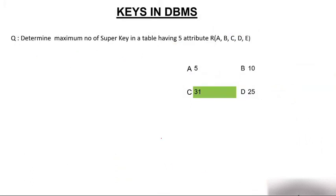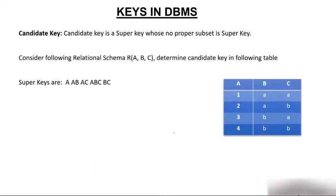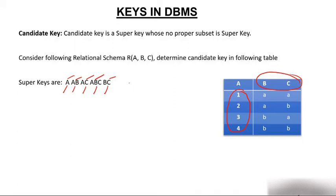Now let's start with candidate key. A candidate key is a super key whose no proper subset is also a super key. Candidate key is first a super key, but the condition is that its proper subset should not be a super key.